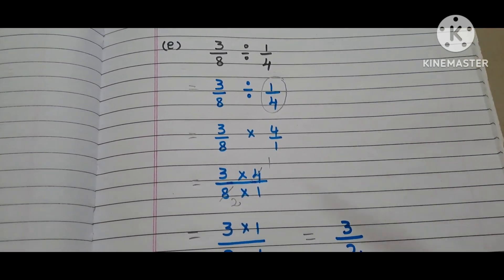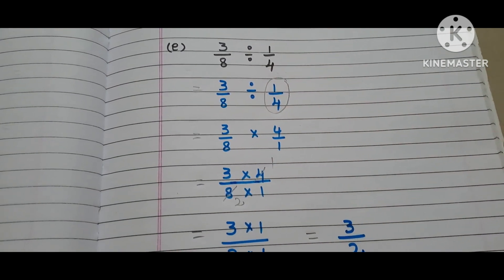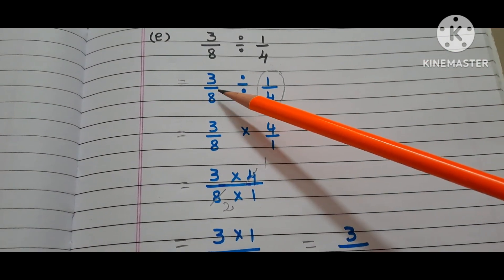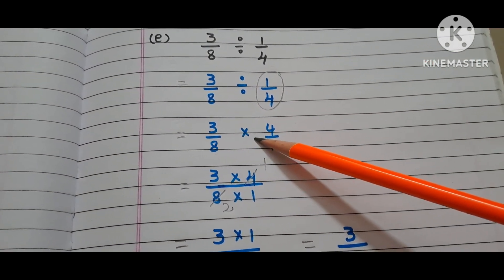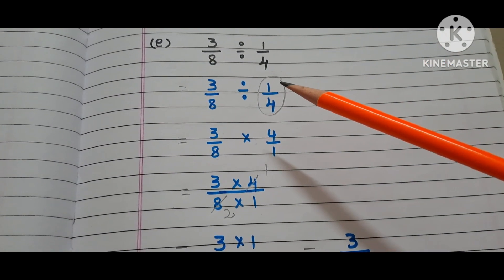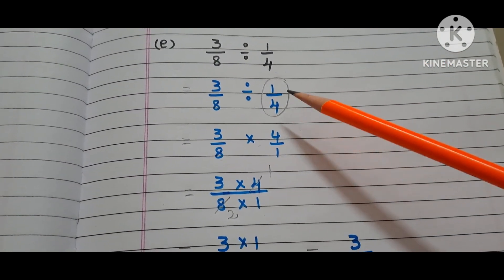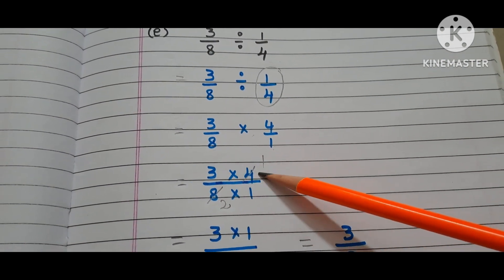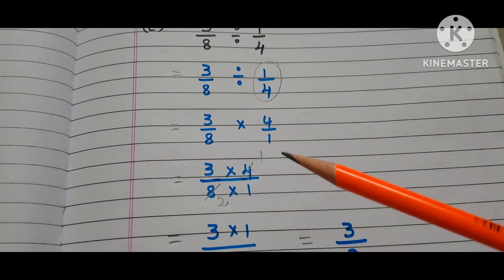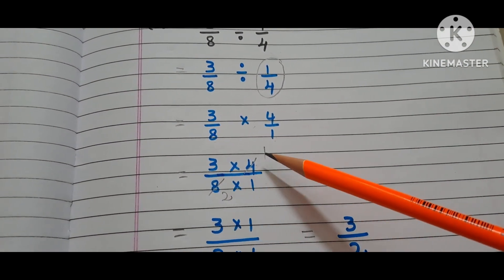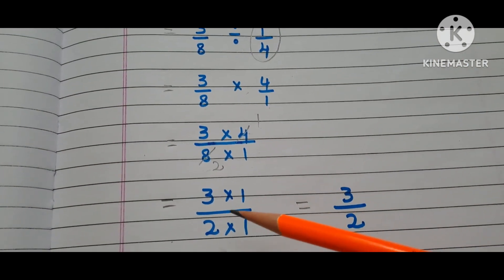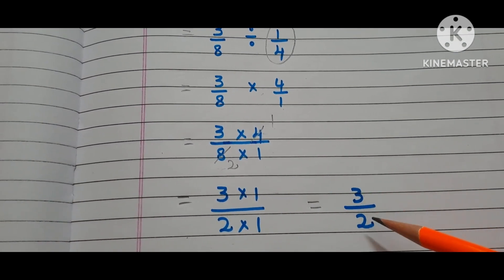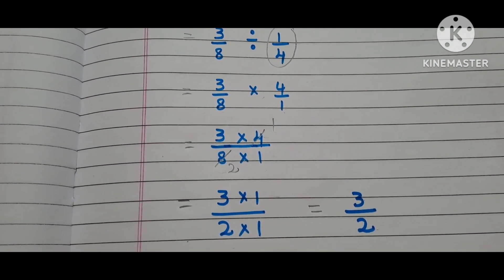Now let us go to the E bit. The question is 3/8 divided by 1/4. Copy down the first fraction 3/8. Write the multiplication symbol instead of the division symbol and write the reciprocal of 1/4, which is 4/1. That is 3 times 4 by 8 times 1. Here we can reduce 4 and 8: 4 ones are 4, 4 twos are 8. So we have 3 times 1 by 2 times 1, that is 3/2. The answer is 3/2.